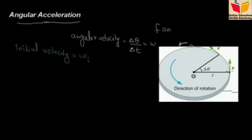This is the point P — we have considered a small particle performing rotation. That is the axis of the center. The distance from the center is R. The angular displacement is delta theta and the direction of rotation is shown by an arrowhead.